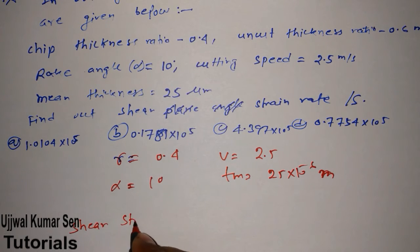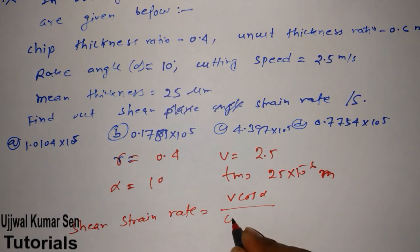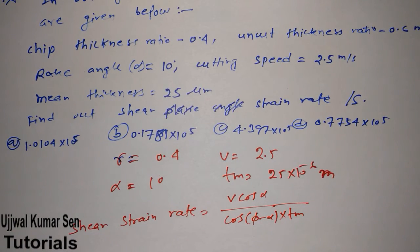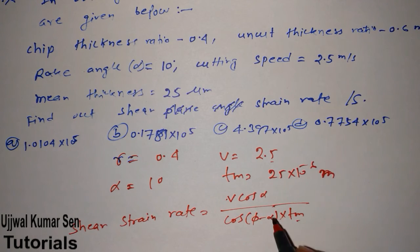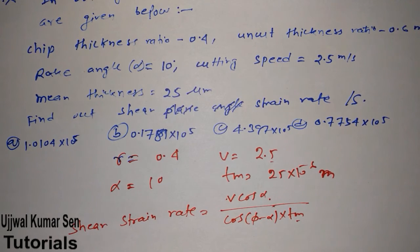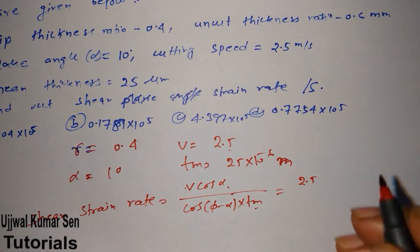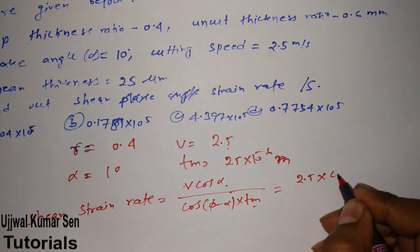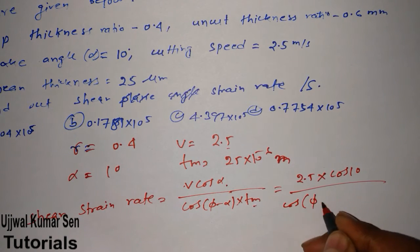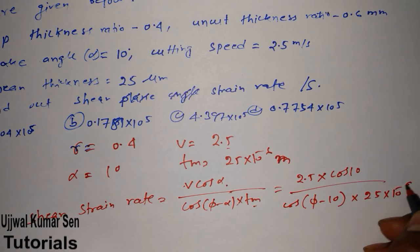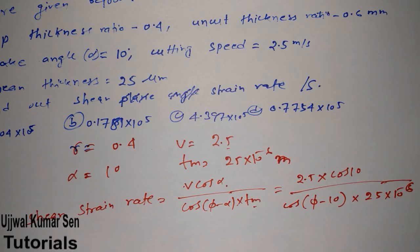Write down the formula for shear strain rate: shear strain rate = v·cos α / cos(φ - α)·tm. We have v, tm, and α, but we don't have φ, so we must find φ first. Setting up the expression: 2.5·cos 10 / cos(φ - 10) × 25×10⁻⁶. Once we get the value of φ we can complete the calculation.